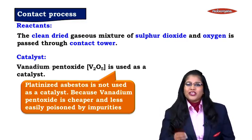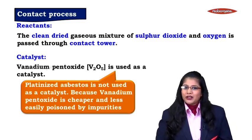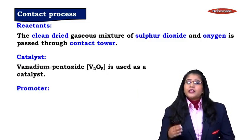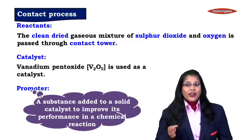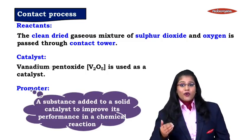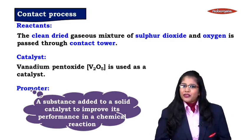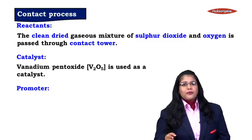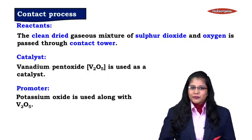Vanadium pentoxide is preferred because it is cheaper and less easily poisoned by impurities. So even after all that purification, if some amount of impurities are present, they might poison the platinized asbestos catalyst, which is rare in the case of vanadium pentoxide. The promoter used here is potassium oxide along with vanadium pentoxide. A promoter is a substance added to a solid catalyst to improve its performance — it further increases the speed of the reaction.